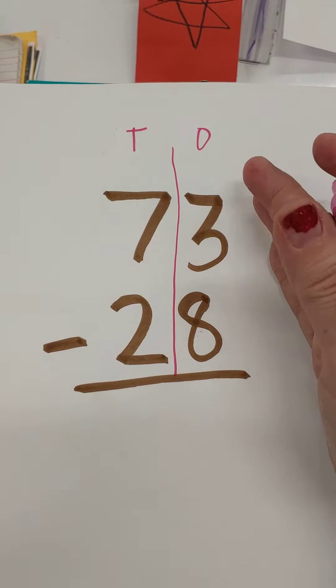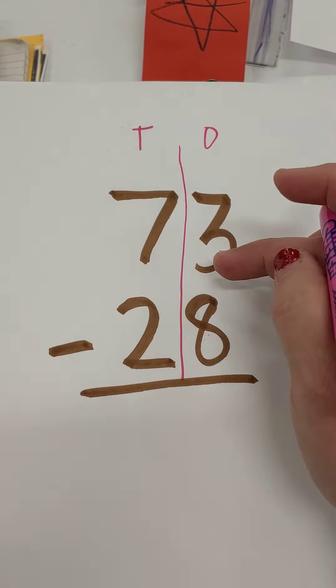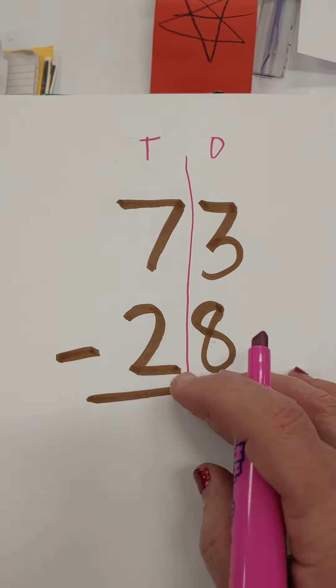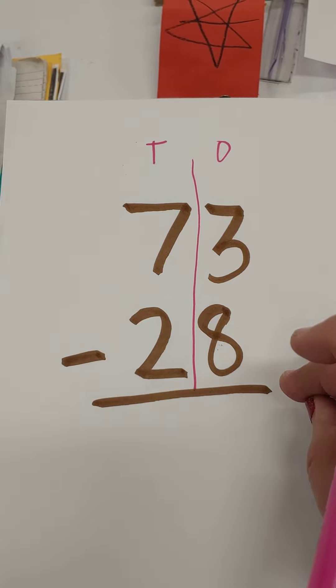Let me show how we subtract bigger numbers, such as 73 minus 28. So 73 is the whole, we're going to take away 28.